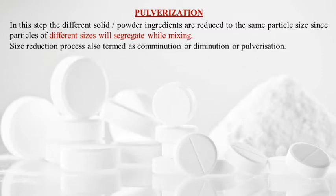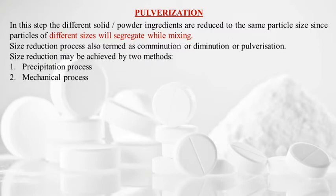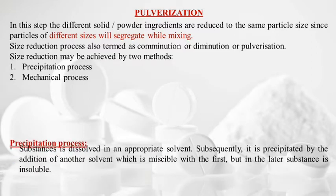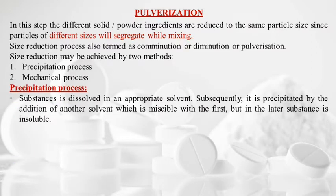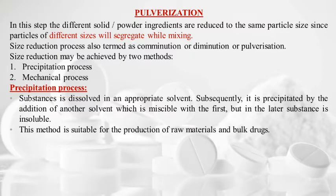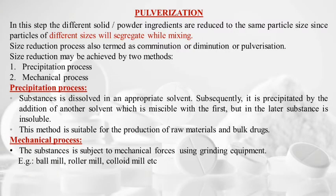Size reduction is also termed comminution, diminution, or pulverization, and may be achieved by two methods: precipitation process and mechanical process. In the precipitation process, the substance is dissolved in one solvent, then another miscible solvent is added in which the substance is insoluble, causing it to precipitate. This method is suitable for the production of raw materials and bulk drugs.